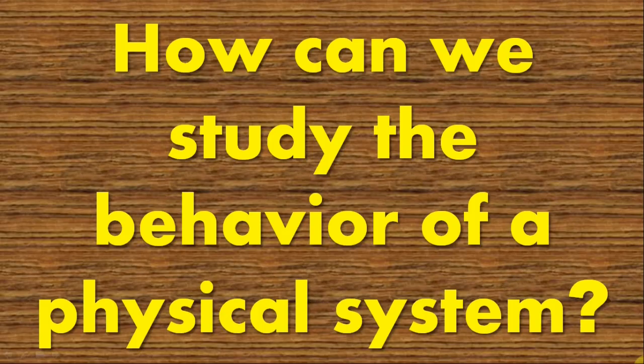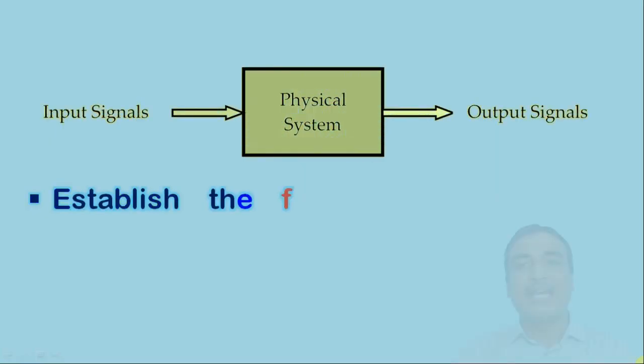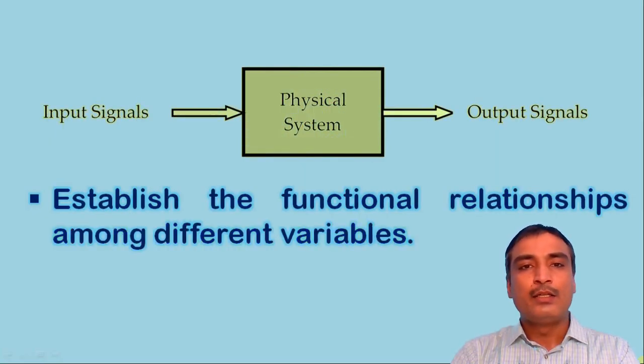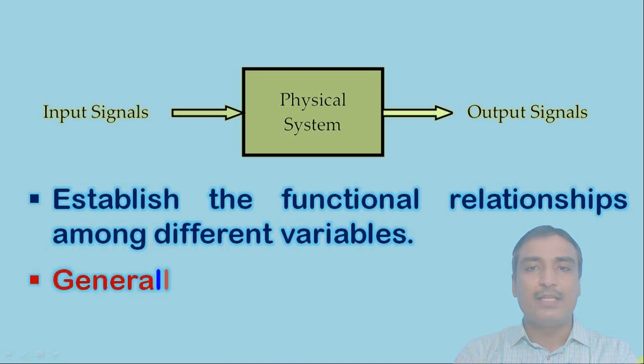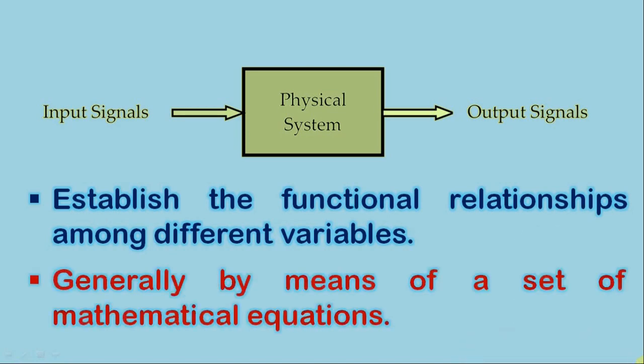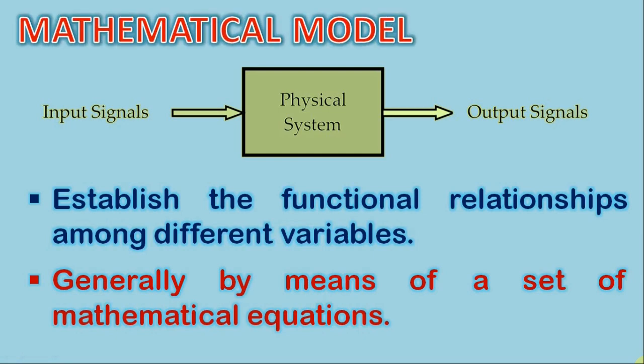In order to study the behavior of a physical system, the engineers are required to establish the functional relationships among different variables. These relationships are generally established by a set of mathematical equations, and these mathematical equations are called the mathematical model of the physical system.